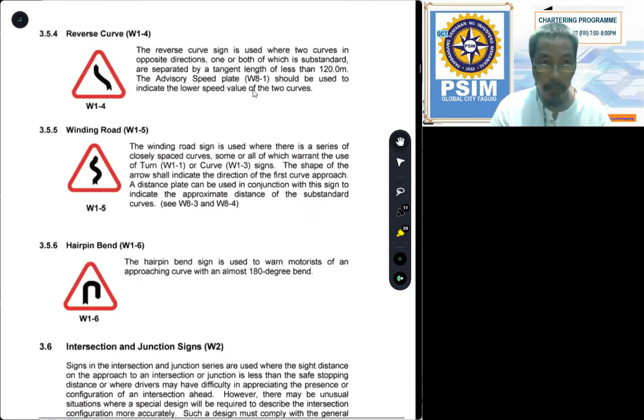Next would be type W1-4, reverse curve. It is curve and also reversed afterwards. And the next one, W1-5, that is winding road. The winding road sign is used where there is a series of closely spaced curves. So it is more than two.